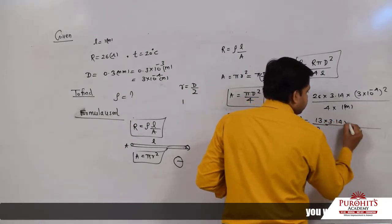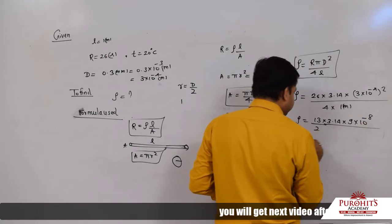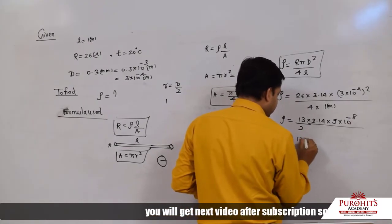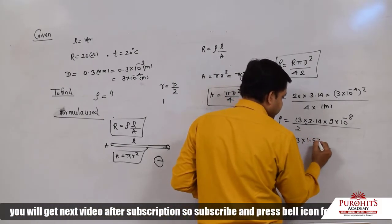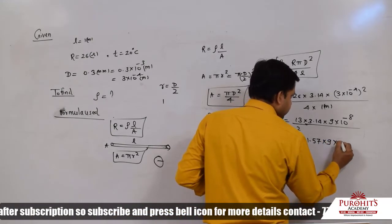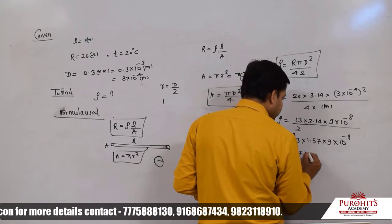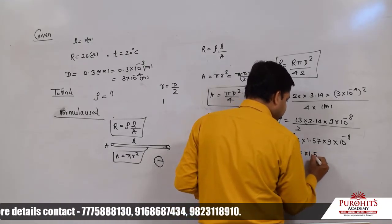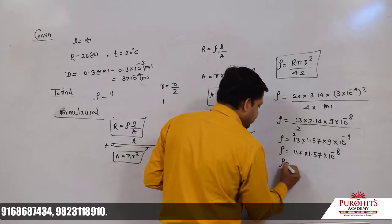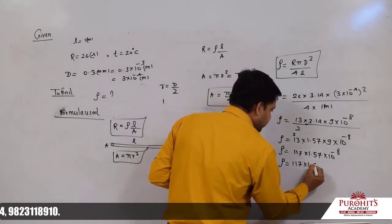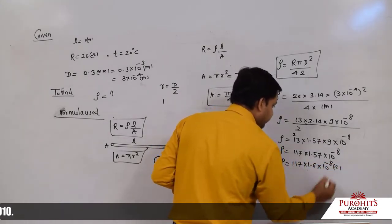Calculating: 3.14 × 9 × 10⁻⁸ gives 1.57 × 9 × 10⁻⁸, which equals approximately 1.57 × 10⁻⁸. Rounding to significant figures, we can write 1.6 × 10⁻⁸ Ω·m. You can further simplify this. That is the answer for Example 12.5.